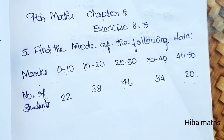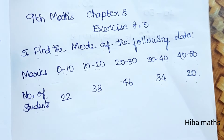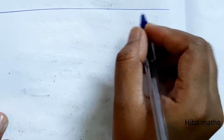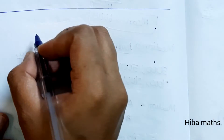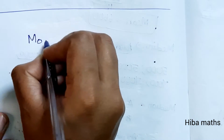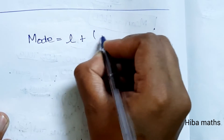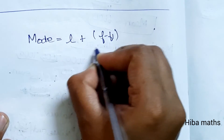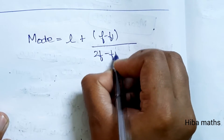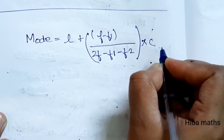So in this data, a table is given and we need to solve for the mode. The mode for grouped data can be found using the formula. The mode formula is: L plus F minus F1, divided by 2 times F minus F1 minus F2, that whole quantity multiplied by C.